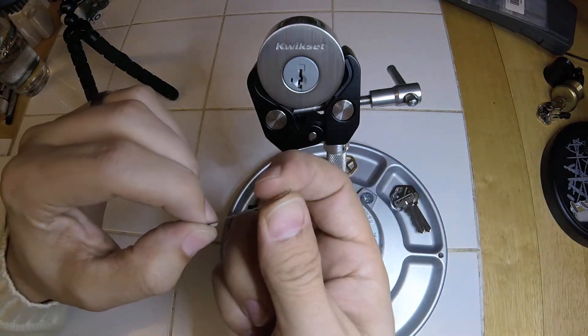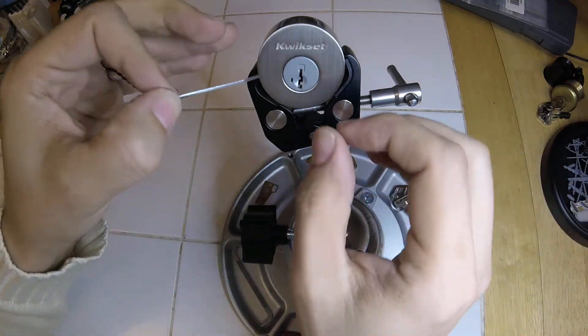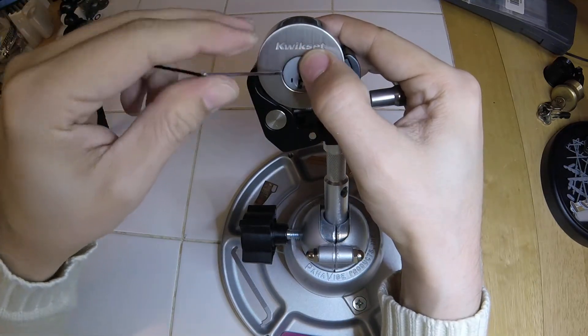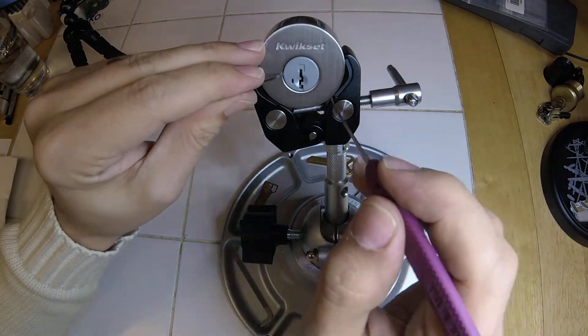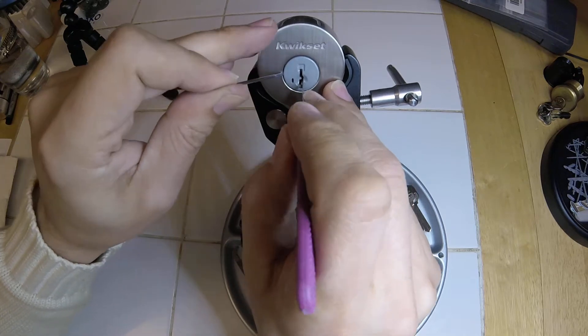A bobby pin has been ground down a little bit to make it thinner and made really smooth. You've got to fit it in the side here, and this is the tricky part. Then while you're putting tension by pushing on the sidebar, you can work the pins.